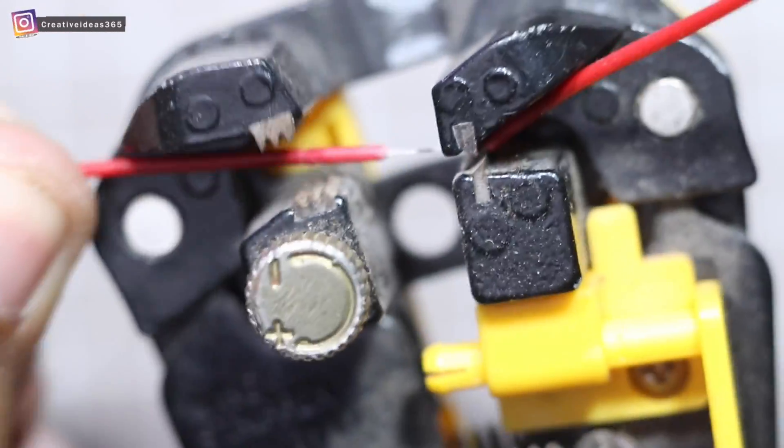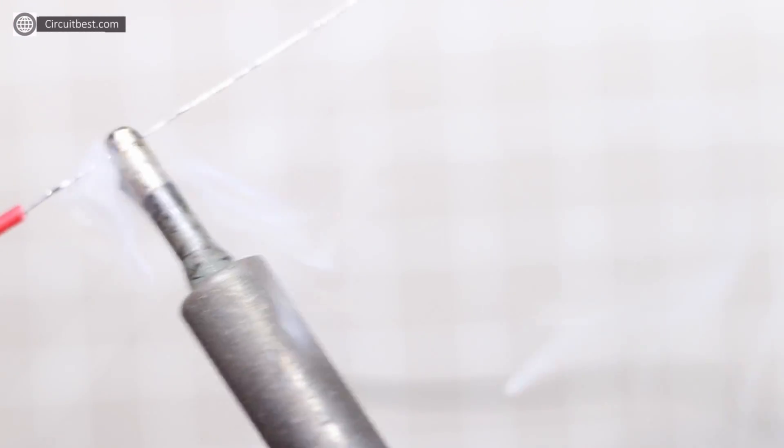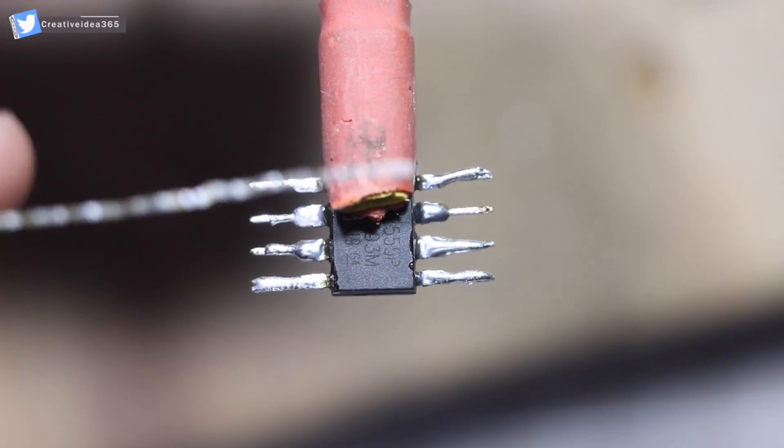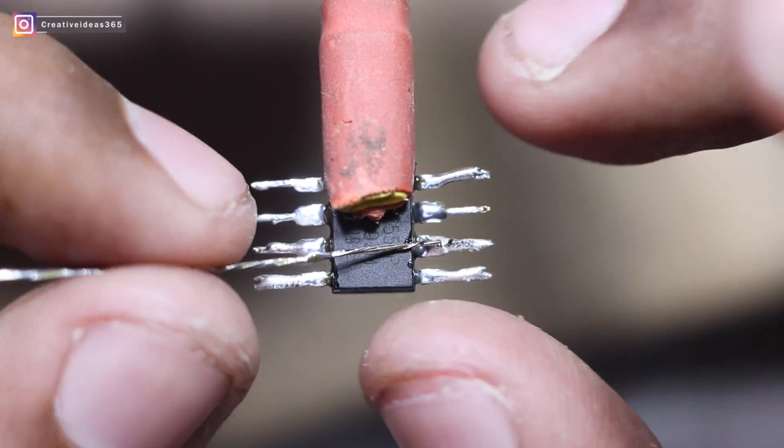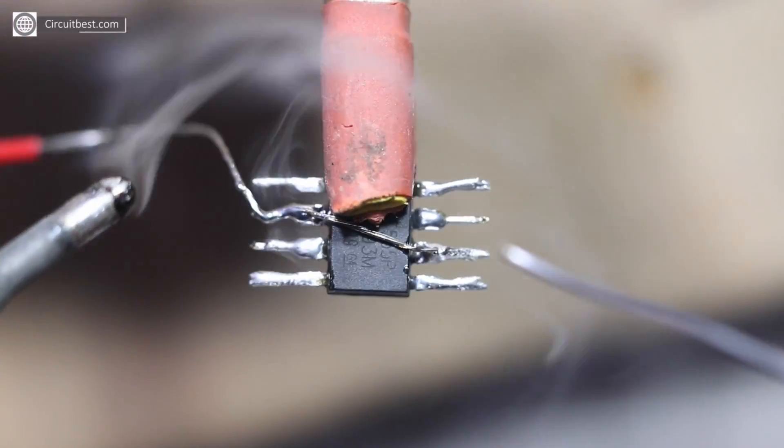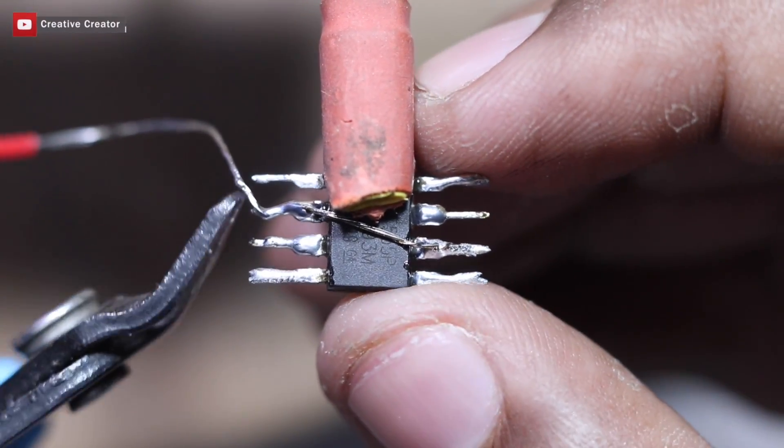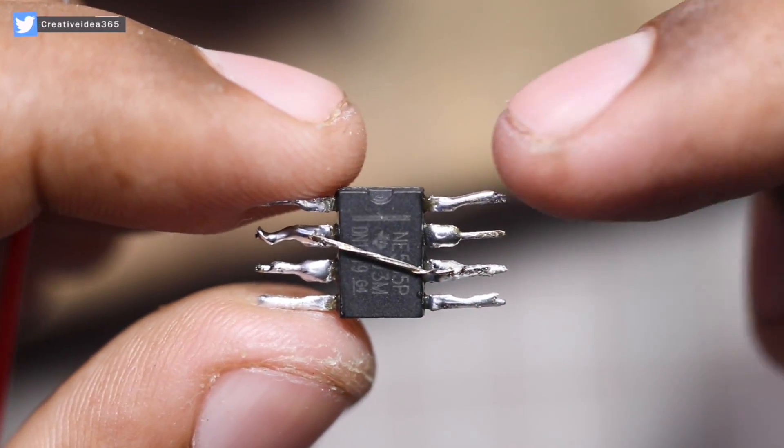Now we will tin the wire for connecting some IC pins. Now connect IC pin 6 with pin 2 of the IC. Now connect IC pin 4 with pin 8 of the IC.